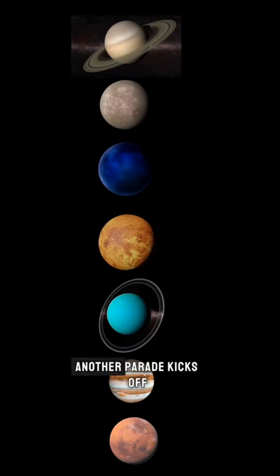In February, another parade kicks off in our solar system. Seven planets will be in alignment.